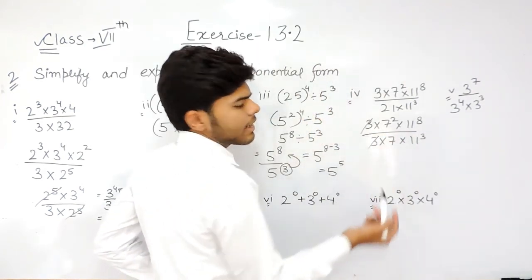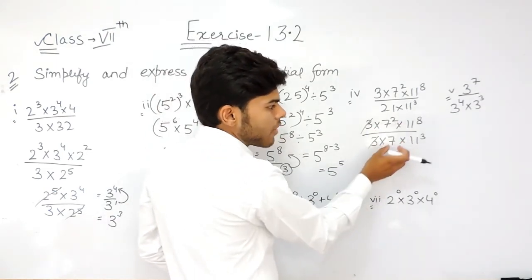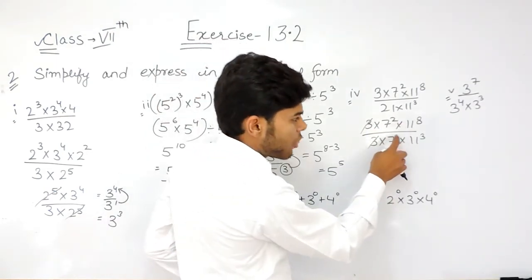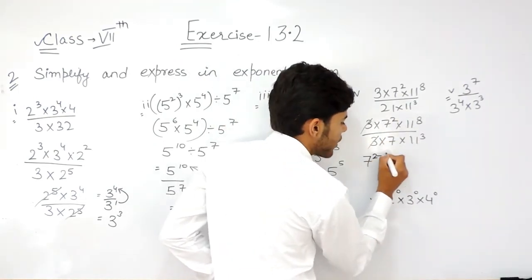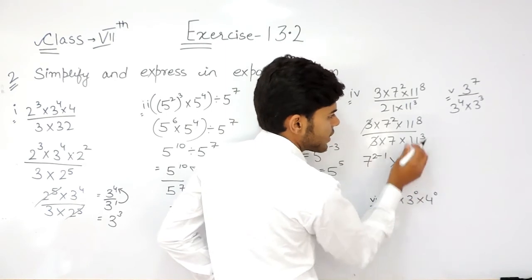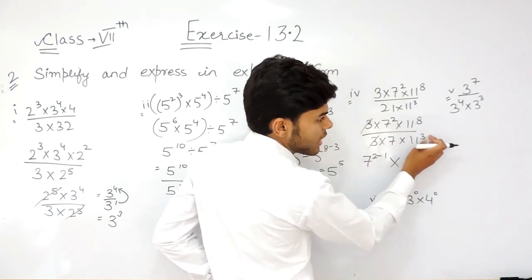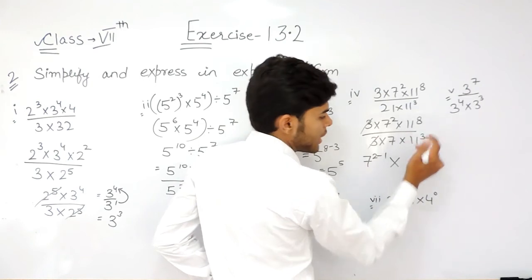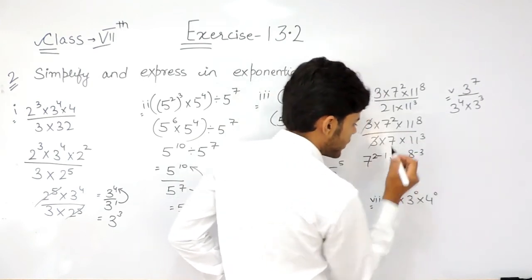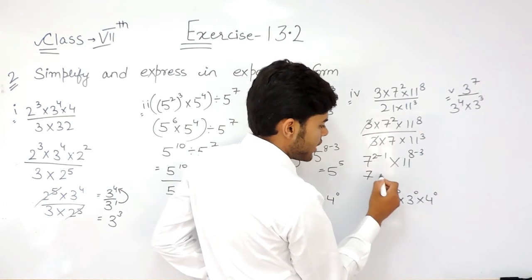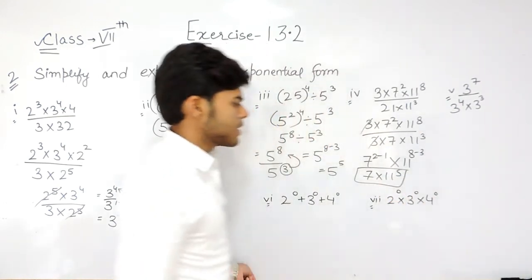Now, this 3 directly gets cancelled out. Here it is 7 to the power 2 and 7 to the power 1 — this one will go in the numerator and it will change its sign. So it will be 7 to the power 2 minus 1. Then 11 to the power 8 and 11 to the power 3 — this 3 will go in the numerator and it will change its sign. So it will be 11 to the power 8 minus 3. Our answer will be 7 into 11 to the power 5.